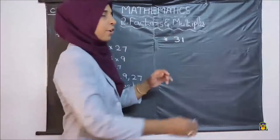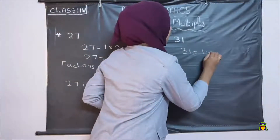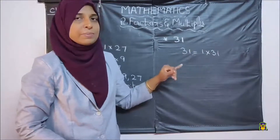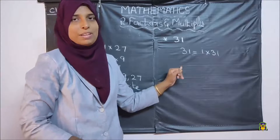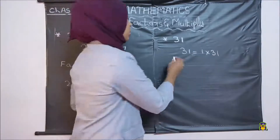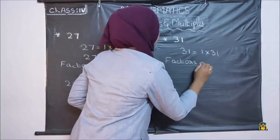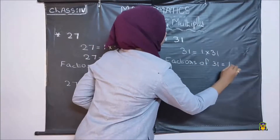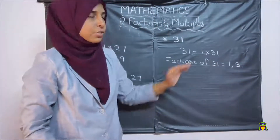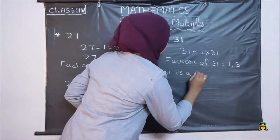Next, what about 31? We can write 31 as 1 into 31. No other combination is there. So factors of 31 are 1 and 31 — only 2 factors, 1 and the number itself. So 31 is a prime number.